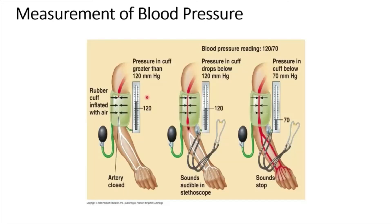Blood pressure can be measured using a sphygmomanometer, which is an inflatable cuff attached to a gauge. The cuff is wrapped around the upper arm. When the cuff is inflated, pressure in the cuff is greater than the pressure in the brachial artery, which is greater than 120 millimeters of mercury, so the artery is closed and no blood flows through.